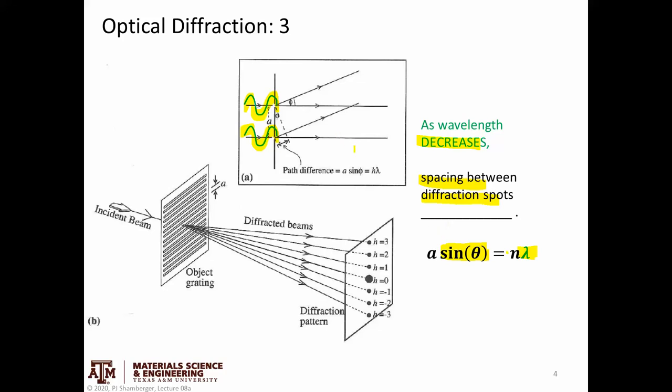So what we've learned is that the spacing between these is inversely proportional to the distance, the real space distance between lines. And there's a relationship between the diffraction spots and the wavelength itself.